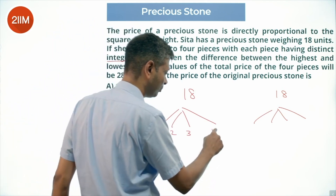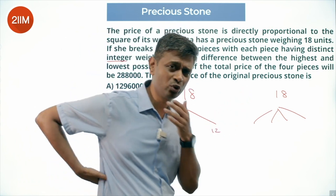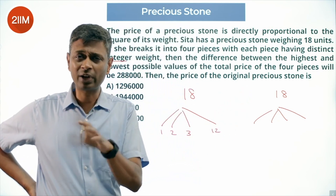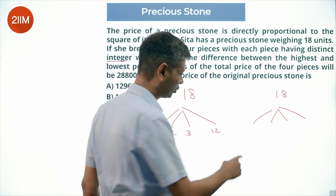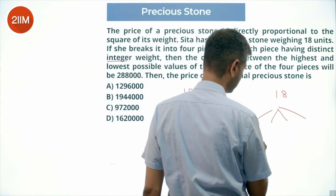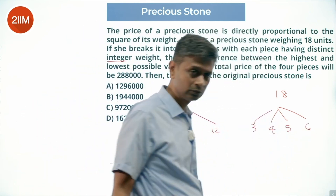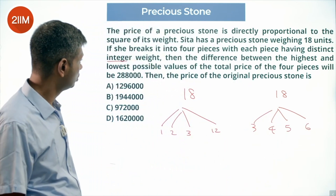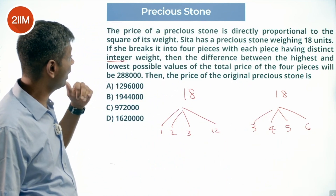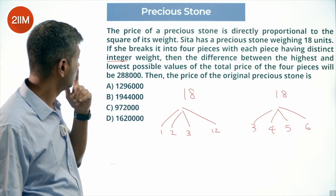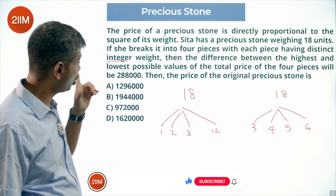1, 2, 3 add up to 6, so the fourth piece should be 12. For the other extreme, all four should be almost equal — 18 divided by 4 is 4.5, so 3, 4, 5, 6 works. Both combinations are now identified.